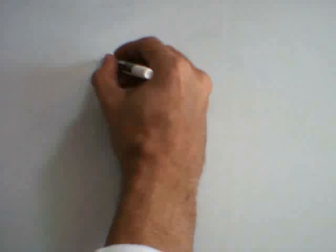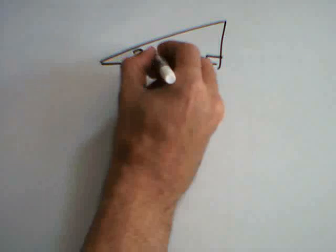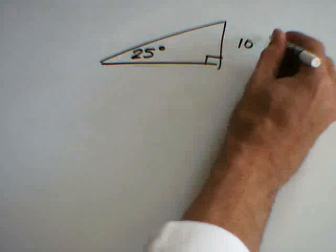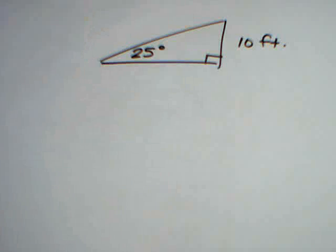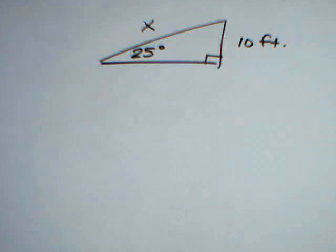Let's suppose that we have a triangle where this angle is 25 degrees, the opposite side is 10 feet, and the hypotenuse is unknown. And so we would like to compute the value of the hypotenuse.